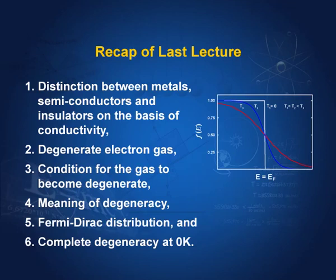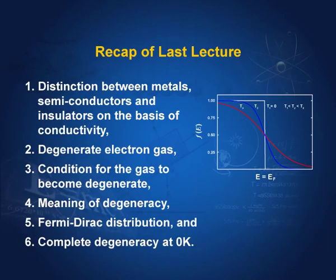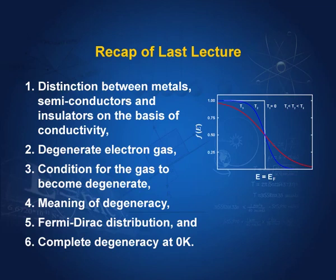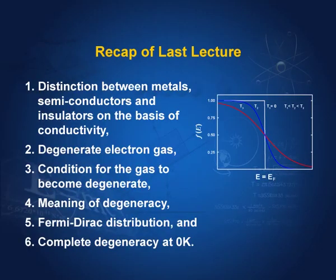In the last lecture, we distinguished between metals, insulators and semiconductors on the basis of their conductivity. We found that the number of free electrons in metals is very high, and therefore this high density electron gas becomes degenerate, because one of the conditions for the gas to become degenerate is very high density. This means that a degenerate gas occupies all the energy states below Fermi energy, and above Fermi energy there are very few states which are occupied. This distribution obeyed by the degenerate gas is called Fermi-Dirac distribution.